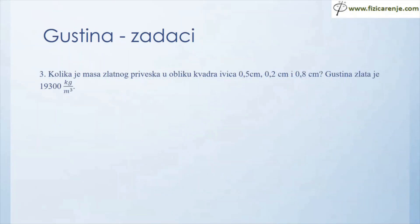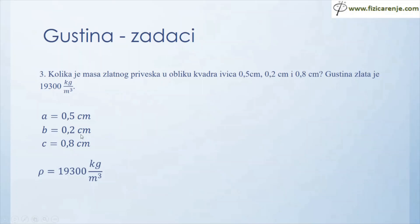Kolika je masa zlatnog priveska u obliku kvadra ivica 0,5 cm, 0,2 cm i 0,8 cm? Gustina zlata je 19.300 kg/m³. Ivice su date u centimetrima pa ću zapreminu dobiti u centimetrima kubnim, tako da mi je najlakše da ovu gustinu prebacim u g/cm³. To radim tako što 19.300 podelim sa 1000 g/cm³, što je 19,3 g/cm³.